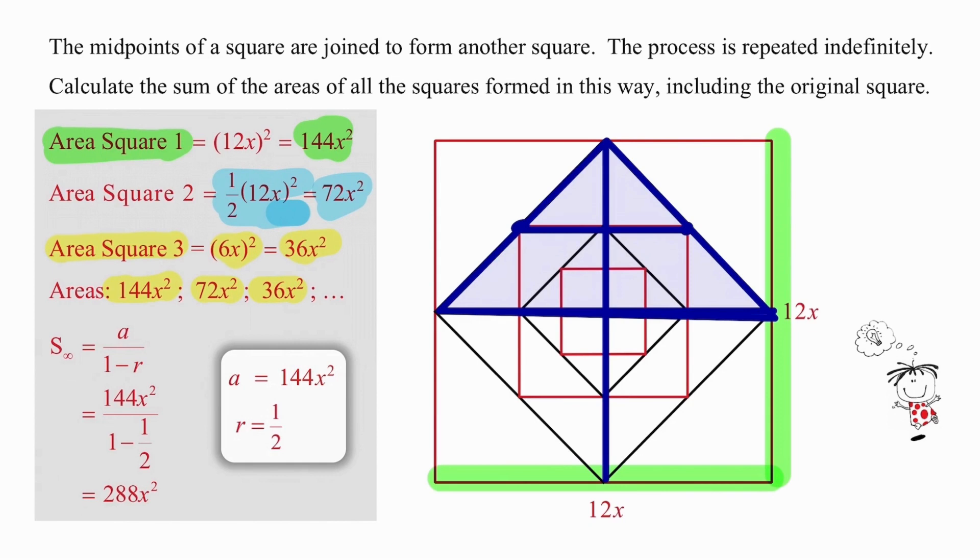This means we can use the sum to infinity formula because a half lies between the boundaries of minus 1 and 1. We know that our first square has an area of 144x squared. Substituting the values into the formula produces a sum to infinity of 288x squared. Without the value of x being given to us, we can't give an answer as a numeric value, we need to give the answer in terms of x.